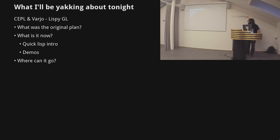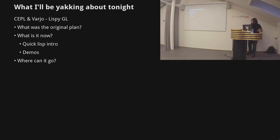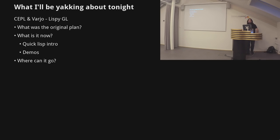Thanks a lot for coming down. I'm going to be talking mostly about a couple of libraries that I've been developing for a few years — one called Keppel, one called Varia — which together make coding GL in Lisp feel like it belongs in that language. The plan is to go through why I did this, what it is now, a bit of live coding, and some retrospectives on what I might do with it.